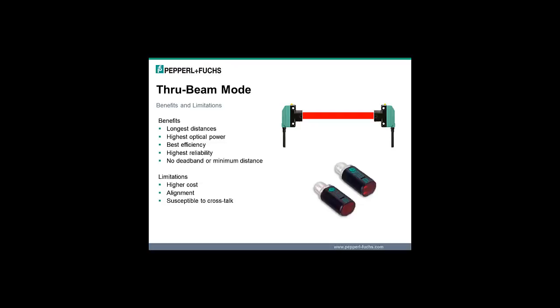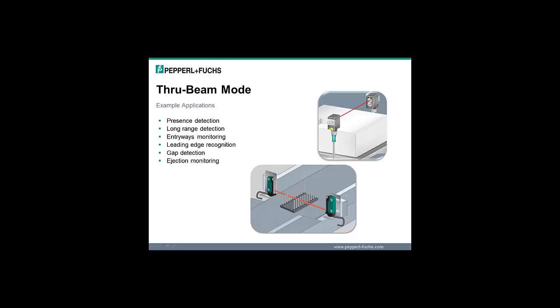Limitations of through beam sensors include higher costs and installation efforts compared to other sensing modes, alignment at long distances can be time consuming, and they are susceptible to cross-talk from similar or neighboring sensors. Applications include presence detection of passing totes or cartons, long range detection of shiny objects, entryway monitoring, precise leading edge recognition, gap detection between materials, and product ejection hopper monitoring.